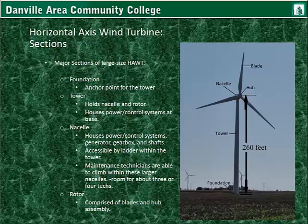With the smaller design, a tail fin allows the wind turbine to self-adjust into the wind. But with the larger ones, that's not practical, so it must be done using a wind vane to detect the direction of the wind and then adjust the nacelle slowly.